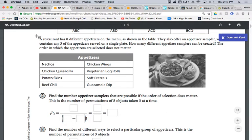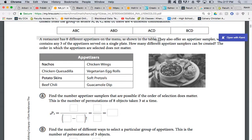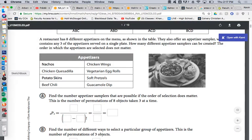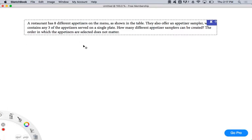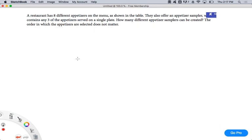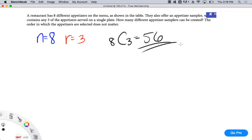The first one, the simplest one, is you've got eight appetizers. You're choosing three for a single plate. First you determine N. N is the number of appetizers I'm choosing from, which is 8. R is the number of appetizers I'm choosing, which is 3. So it's 8C3. I plug it into my calculator. I get 8C3, which is 56. Does that make sense to you guys? Simple as that.